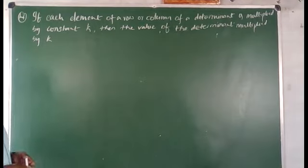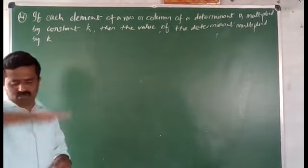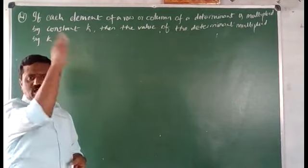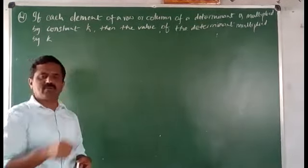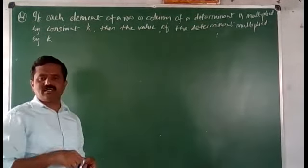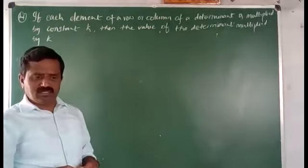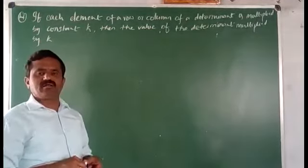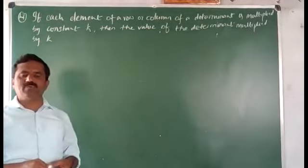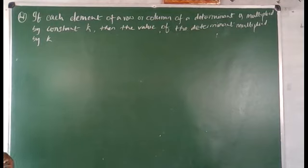So today, this is the fourth property: if each element of a row or column of a determinant is multiplied by a constant k, then the value of the determinant is multiplied by k. So let's prove this.